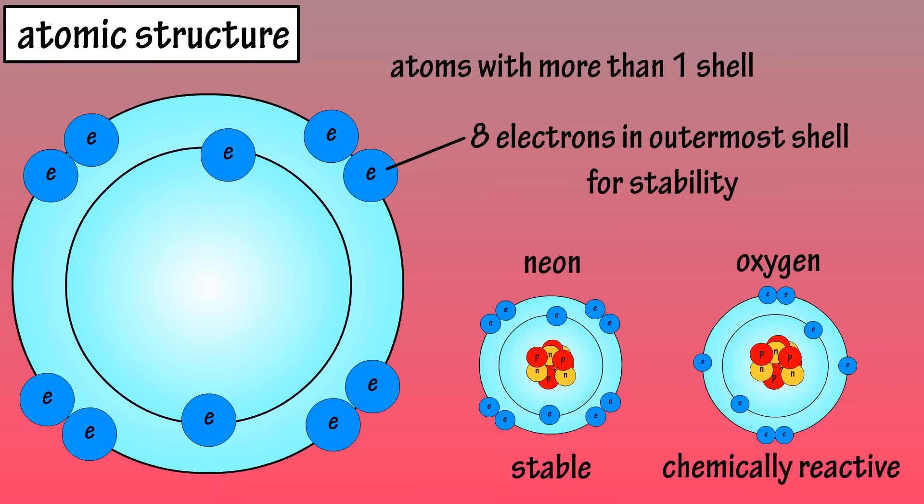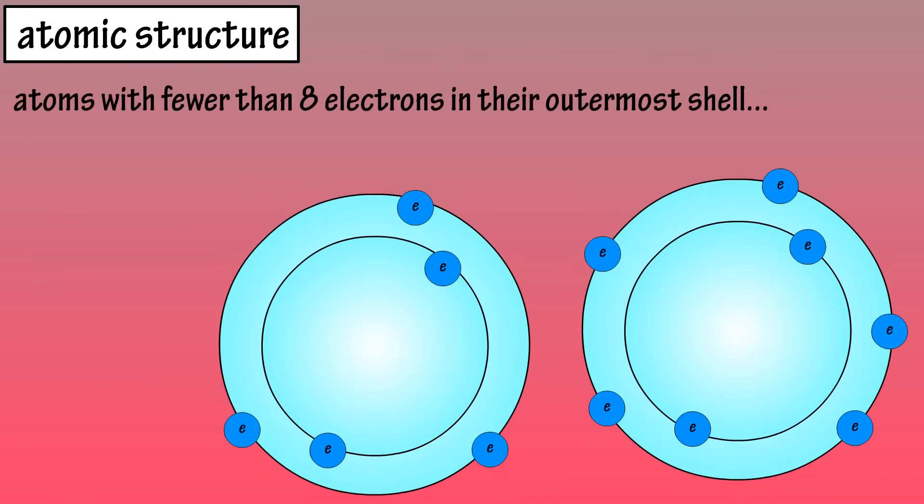And oxygen, which has only 6 electrons in its outermost shell, is chemically reactive. Atoms that have fewer than 8 electrons in their outermost shells will try to share, gain, or lose electrons in order to become stable.